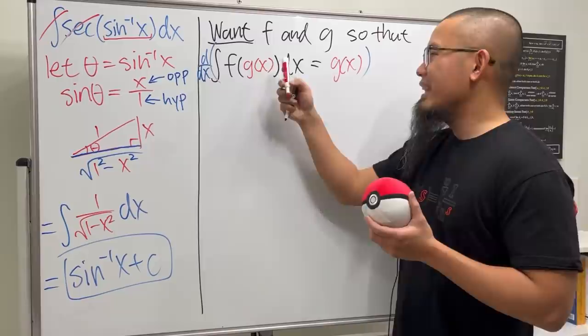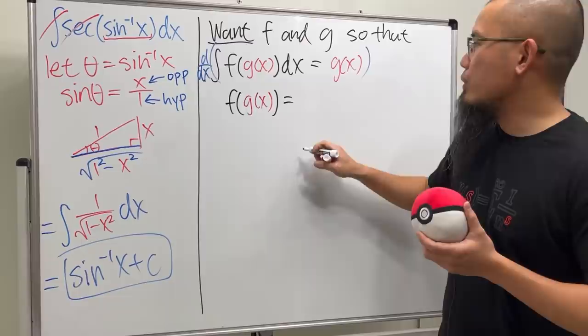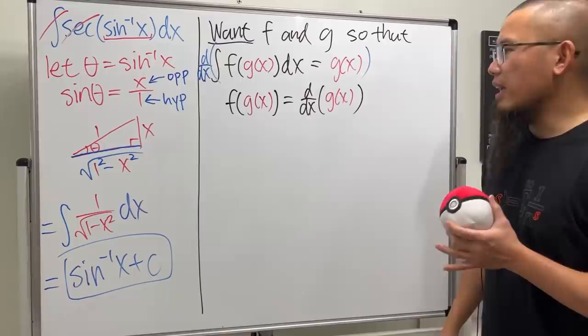When you do that, the derivative and the integral can legitimately cancel out and then we'll just get f of g of x, and that's been equal to we will have to differentiate g of x.